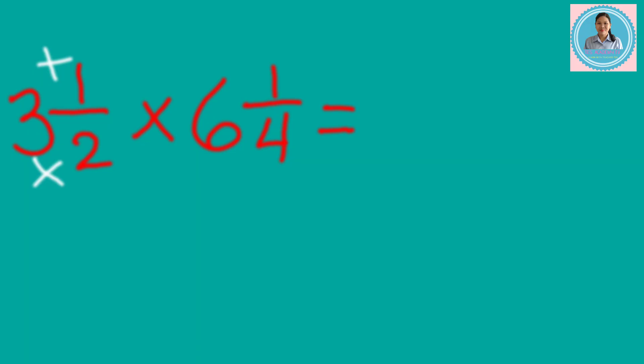Let's answer. 2 × 3 equals 6 plus 1 equals 7. Then, copy the denominator, 2. Then, do the same in the multiplier.